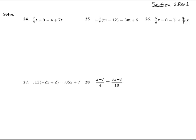Here we have 7/3 t minus 8 equals 4 plus 7t. No parentheses to get rid of, so I'm going to get rid of those fractions first. Times everything by 3 as that least common denominator, and we get 7t minus 24 equals 12 plus 21t.